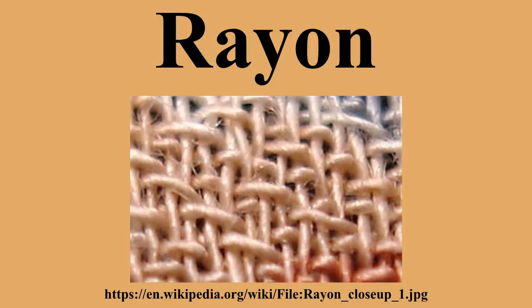In 1894, English chemist Charles Frederick Cross and his collaborators Edward John Bevan and Clayton Beadle patented their artificial silk. They named the material viscose because its production involved the intermediary of a highly viscous solution. The process built on the reaction of cellulose with a strong base, followed by treatment of that solution with carbon disulfide to give a xanthate derivative. The xanthate is then converted back to a cellulose fiber in a subsequent step.